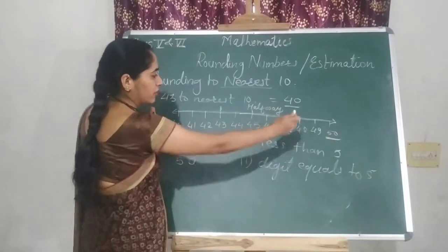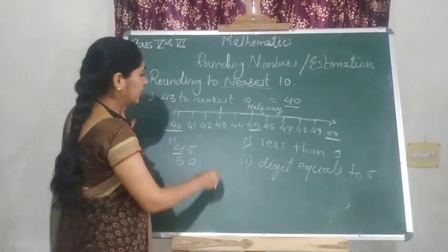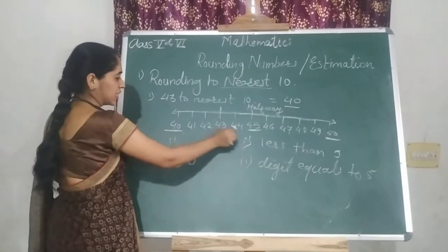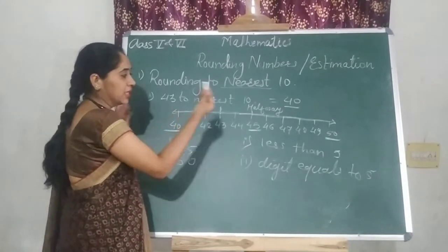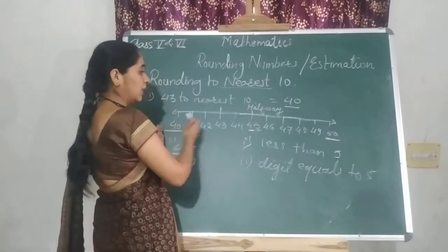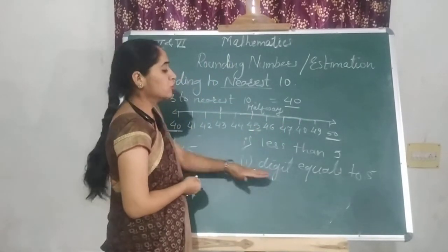I have the number line in front of you. Earlier we talked about 43, which is 40, so rule first according goes to 40. Second it is 45, it's in the middle. So where will it go? 40 or 50? So what does the rule say?